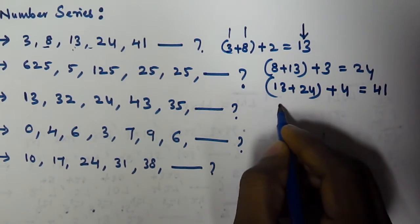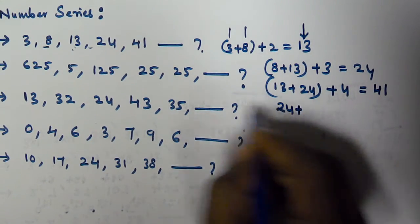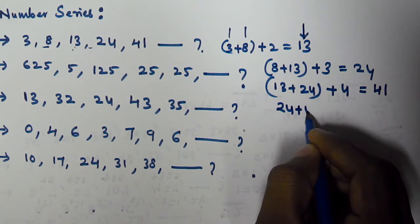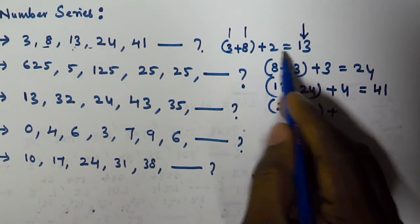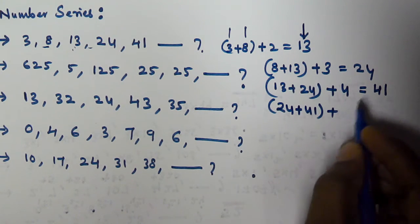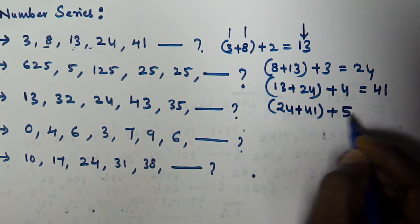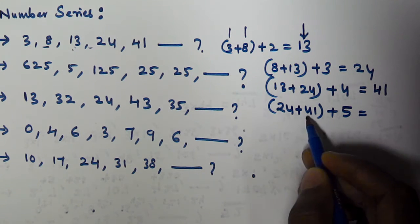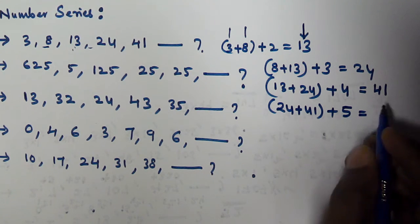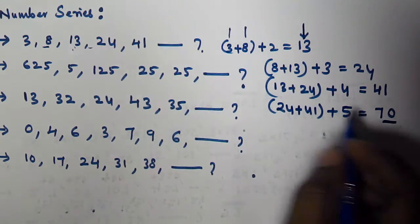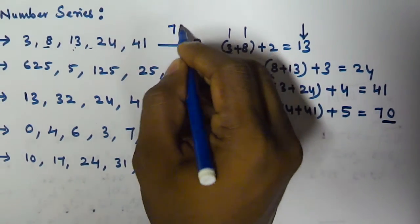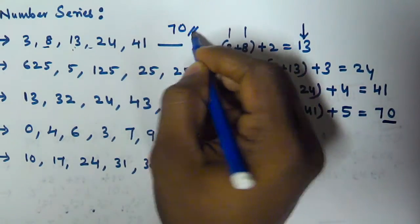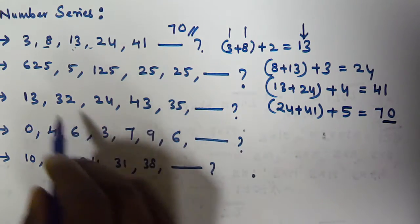So the next number will be 24 plus 41, and here we added 2, then 3, then 4, so now we add plus 5. 24 plus 41 is 65, plus 5 equals 70. So the next number in this series is 70.